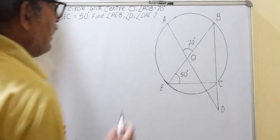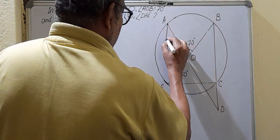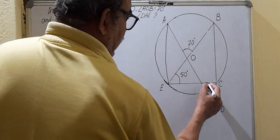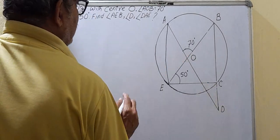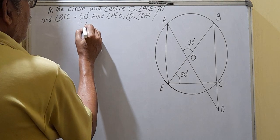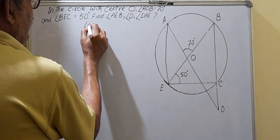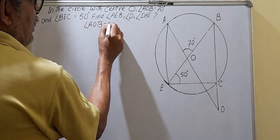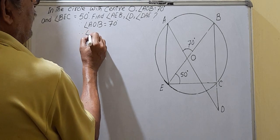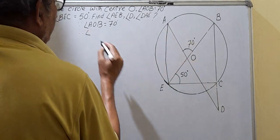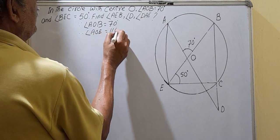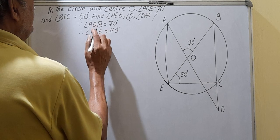To find angle DAE, you need to join AE. When angle AOB = 70 degrees is given, therefore angle AOE = 110 degrees.